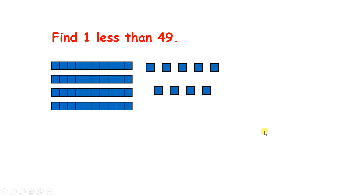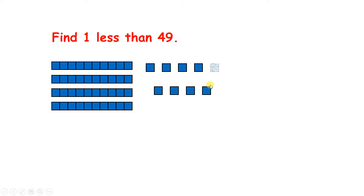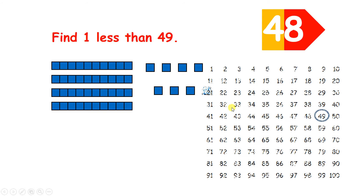Now one less than 49. I think you're getting the hang of this. So we have 4 tens and 9 units. Take away 1, and we have 48. And remember, on the 100 square, we find one less by moving to the left.